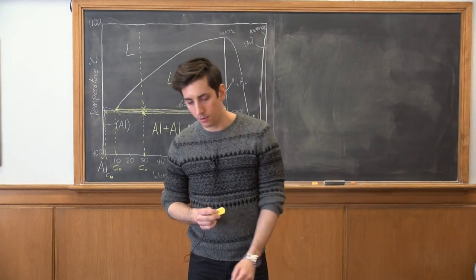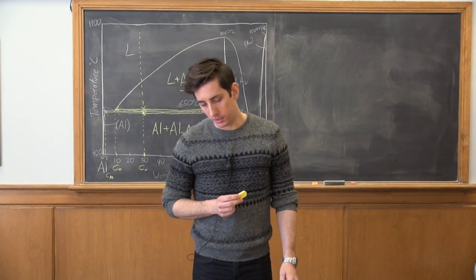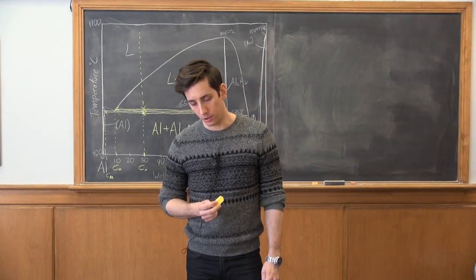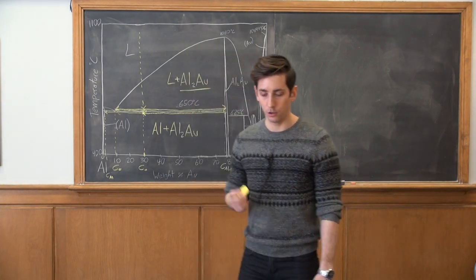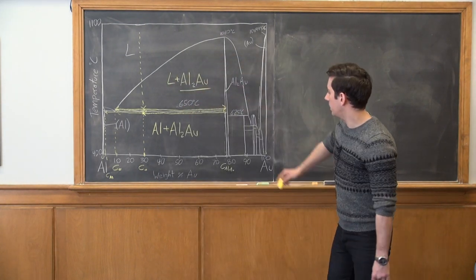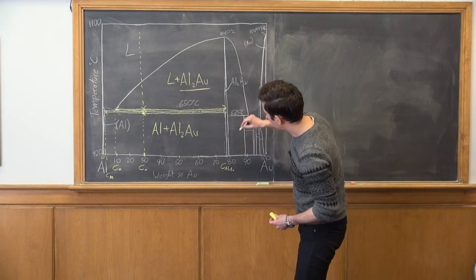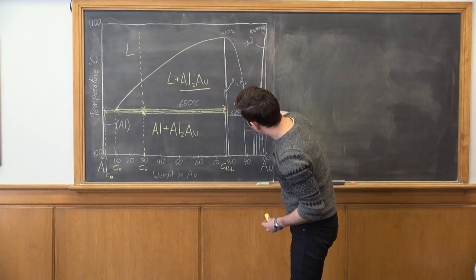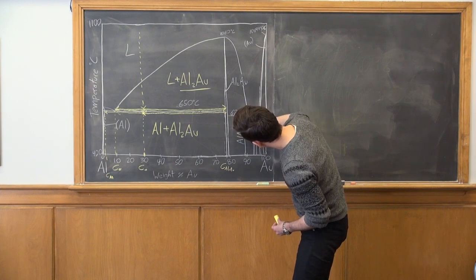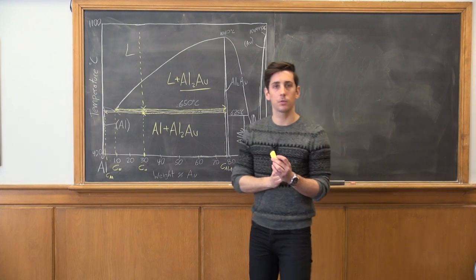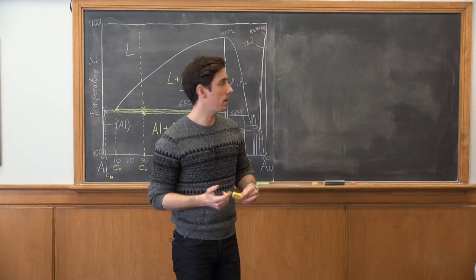Part D reads: unrelated to this specific alloy composition, but still relating to this alloy system, calculate the composition of the intermetallic aluminum gold. So we can see the aluminum gold is actually labeled right here on this line. And in order to find the alloy composition we just need to take the ratios of their atomic weights.